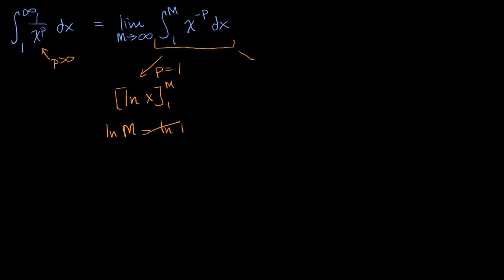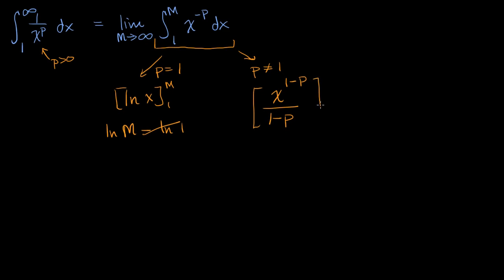Now let's think about the situation where p does not equal one. We're kind of just reversing the power rule from basic differentiation. We increment the exponent, so it would be x to the negative p plus one — we can write that as x to the one minus p, which is the same thing as negative p plus one — and then we divide by that exponent: one minus p. Evaluated from one to m, this is going to be m to the one minus p over one minus p, minus one to the one minus p over one minus p.